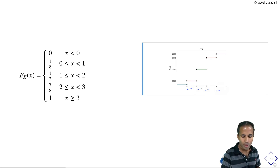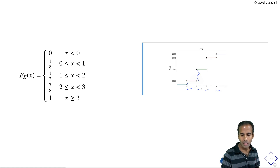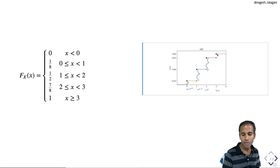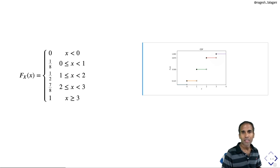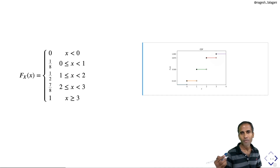The probability of X equal to 0 is the jump length at 0, probability of X equal to 1 is the jump length at 1, probability of X equal to 2 is the jump length at 2, and probability of X equal to 3 is the jump length at 3. Let us calculate these so we can write the PMF of the random variable X.